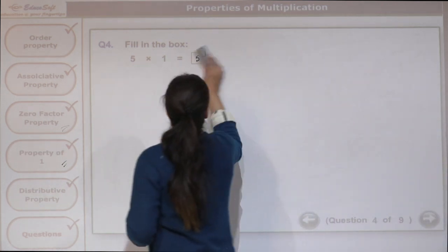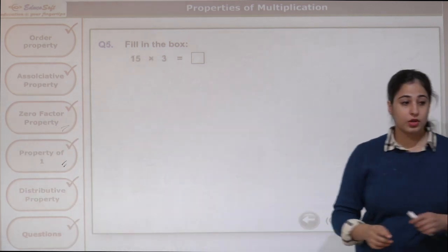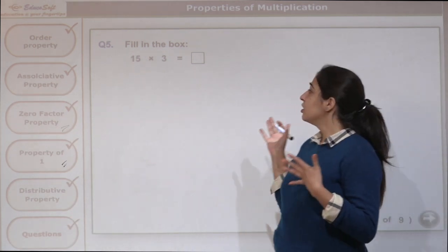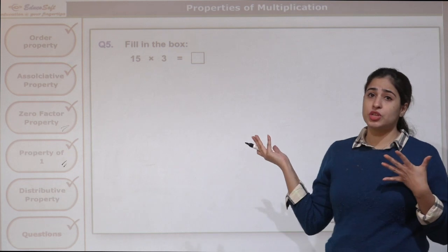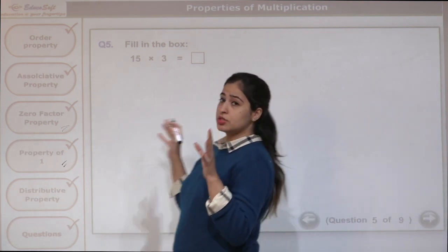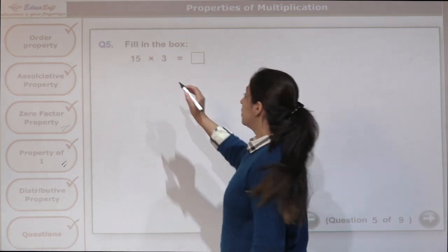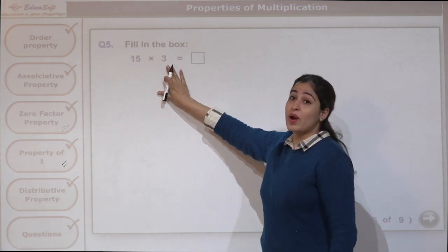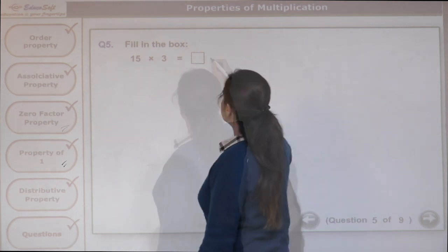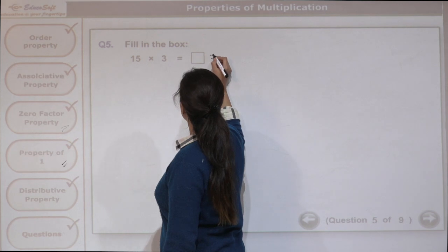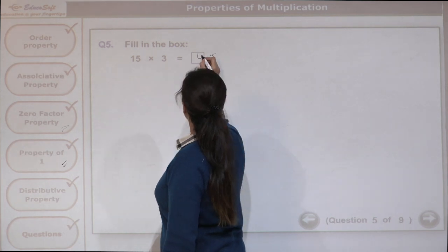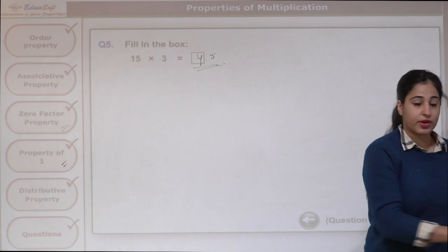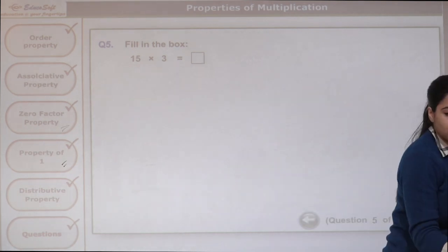Let us move to the next question. We are going to multiply: 15 times 3 gives us what? This is revision of multiplication — a 2-digit number multiplied by a 1-digit number. We get 45. Our answer is 45.